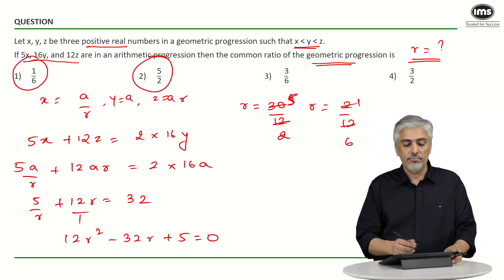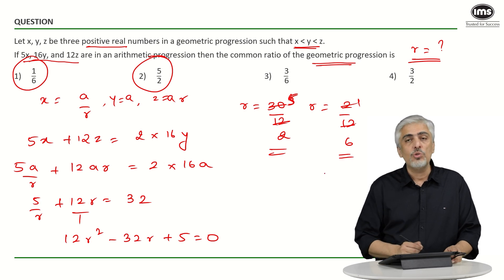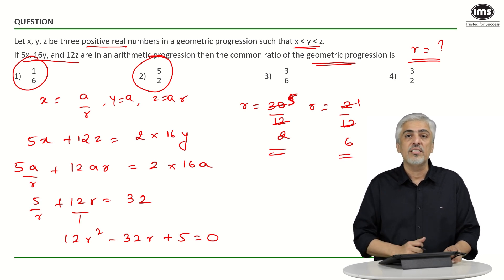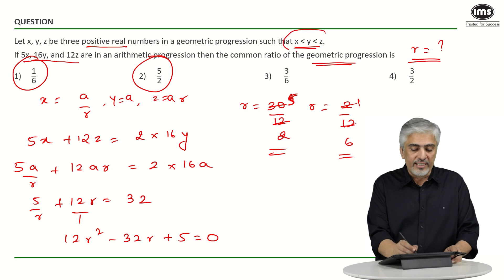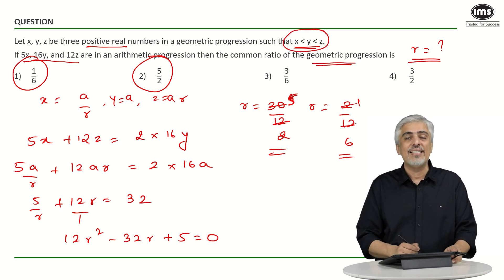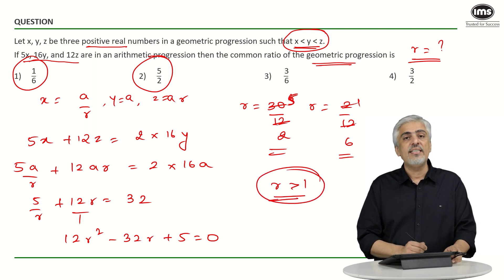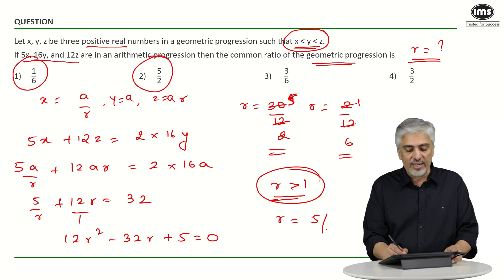This is where a lot of students made a mistake. They reached till here and could not mark an answer for this question. You forgot to read this part: x was less than y was less than z, which means it was an increasing GP. If it's an increasing GP, r has to be greater than 1. Therefore r had to be 5 upon 2, which was the second option.